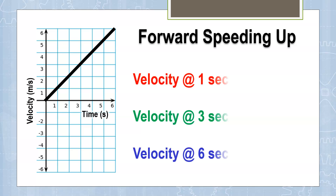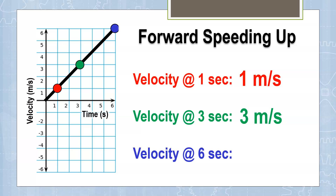If I wanted to find the velocity at different time periods, I can just read the graph — this is called interpolating. At one second, my object is traveling one meter per second; that's not its position, that's its current velocity. At three seconds, it's traveling at three meters per second. At six seconds, it's traveling at six meters per second. I'm just reading the points — it's like playing Battleship.